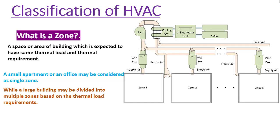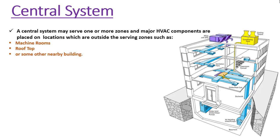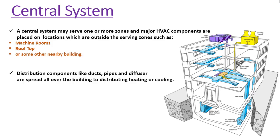A central system may serve one or more zones, and major HVAC components in the central system are placed in a location outside the serving zone. These locations might be machine rooms, rooftops, or some other nearby building. Distribution components like ducts, pipes, and diffusers are spread all over the building to distribute heating or cooling inside the conditioned zone.